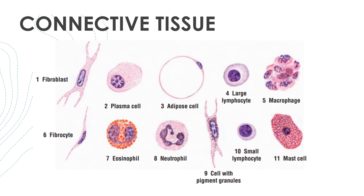This illustration shows the cells: your fusiform-shaped fibroblast, your plasma cells, your adipose cell or adipocytes, your large lymphocytes, your macrophage, your mast cells, your small lymphocyte, your neutrophil, and your eosinophil. Please note the orange granules of your eosinophil. Your fibrocyte is the inactive fibroblast.